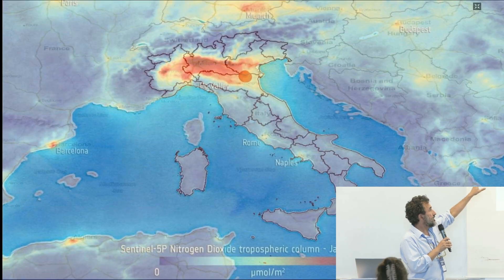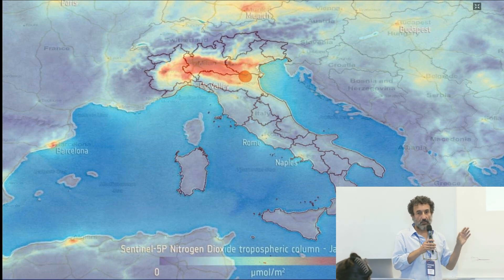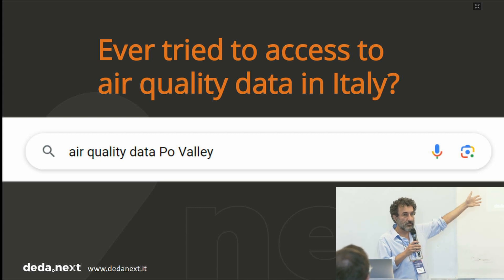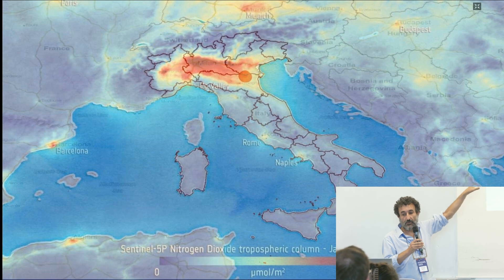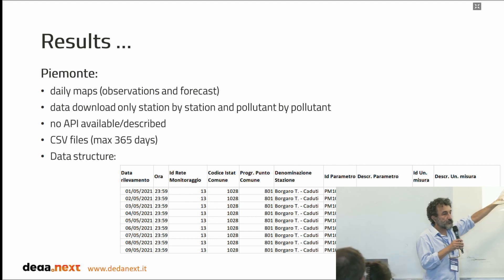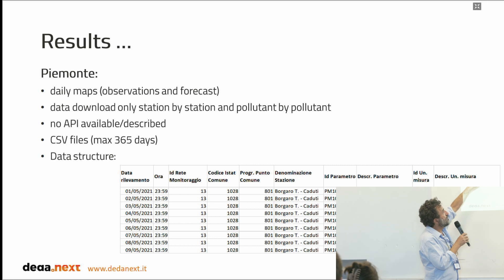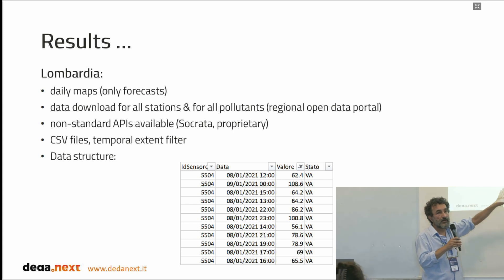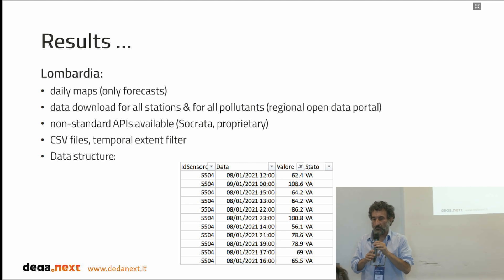So, the problem. We start from Ferrara, a medium-sized city located in the Po Valley, which is one of the most polluted areas in Europe. When we started a couple of years ago to work on air quality data, the first thing we did was to search for air quality data in four regions. Piemonte was already making air quality data available, but without any publicly available APIs. Lombardia was providing the same data encoded in CSV format, but with a different structure and a different model.